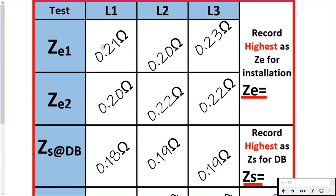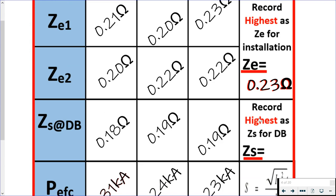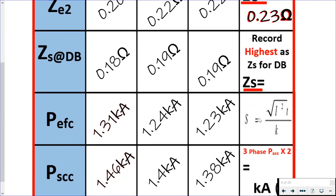You'll see there we have carried out six earth fault loop impedance tests: two on line one, two on line two, two on line three. The highest of which as we can see here is 0.23 ohms, so that's the one that we would record on our certificate and our condition report.